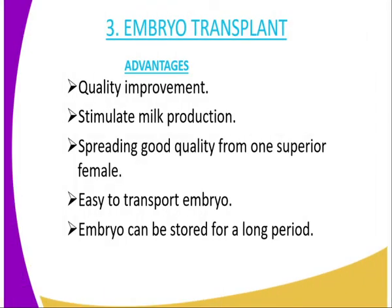The third method is embryo transplant. In embryo transplant, it involves harvesting of an ovum from one superior cow and fertilizing the ovum using collected semen from a superior bull. The embryo is formed as a result of the semen and ovum being put into a test tube where fertilization takes place to form a zygote, which develops into an embryo. The embryo can then be stored waiting for the recipient cow.